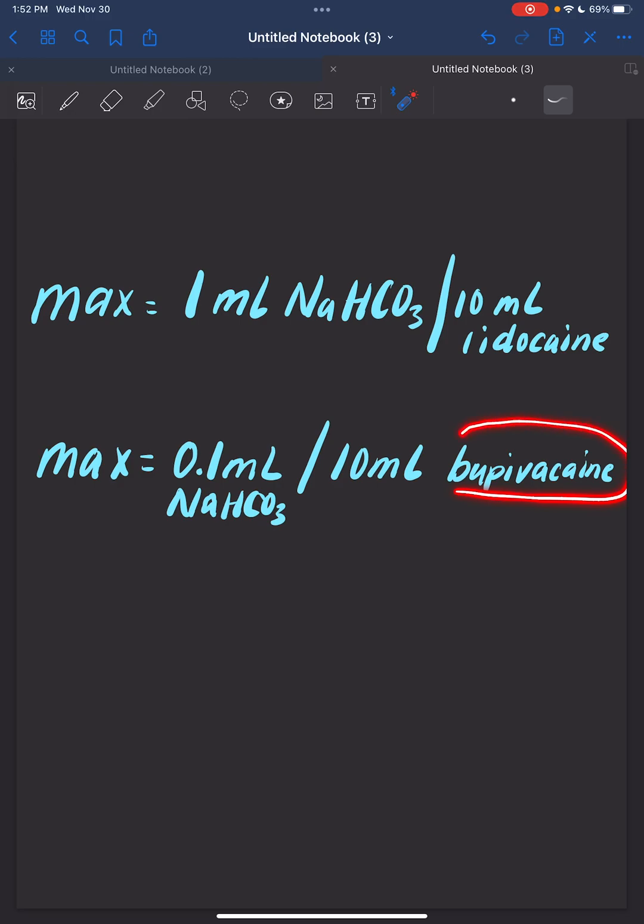With bupivacaine, we're going to give 0.1 mL of sodium bicarb per 10 mL of bupivacaine. If we have 30 mL of bupivacaine, we're going to give 0.3 mL of bicarb into that mixture.